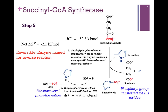We're forming a covalent bond and creating order, which has a large unfavorable change in delta G. If we sum the two together — the gain of energy by breaking the thioester bond, and the requirement of energy to form the phosphoester bond to make GTP — the sum is still slightly favorable but near equilibrium. So overall it's a reversible reaction, and the enzyme is actually named for the reverse reaction.